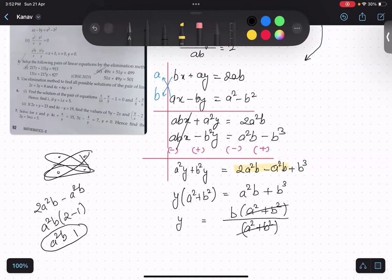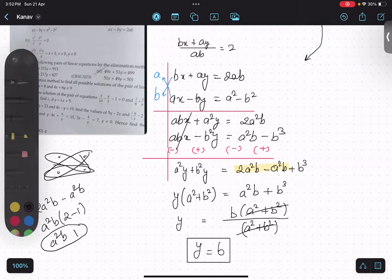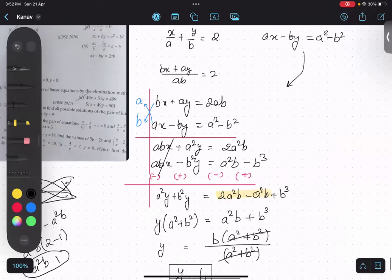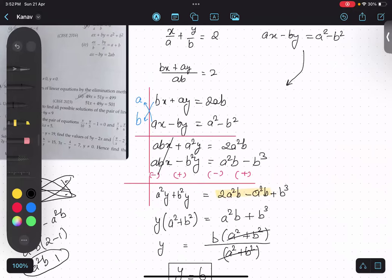And this one will cancel, so my y value is b. What I'm going to do, I'm going to substitute this in first equation. So let's say this is my first equation, this is my second equation, and this is my 3. Substituting 3 and 1.